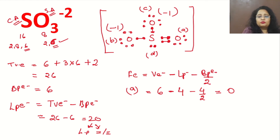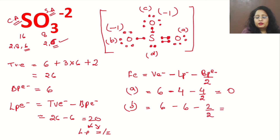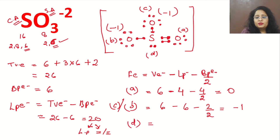For oxygen B: valence electrons = 6, lone pair electrons = 6, bond pair electrons = 2. Formal charge = 6 − 6 − (2/2) = 6 − 6 − 1 = −1. So oxygen B has a formal charge of −1. Since oxygen C is identical to B, it also has a formal charge of −1.